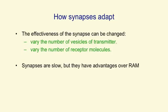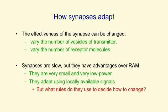Synapses are very slow compared with computer memory, but they have a lot of advantages over the random access memory on a computer. They're very small and very low power, and they can adapt — that's the most important property. They use locally available signals to change their strengths, and that's how we learn to perform complicated computations. The key issue is how do they decide how to change their strengths — what are the rules for how they should adapt?